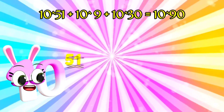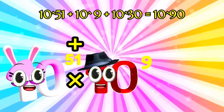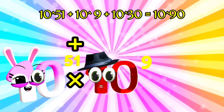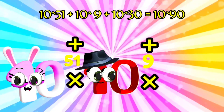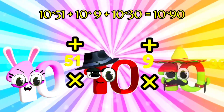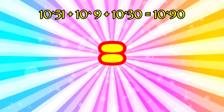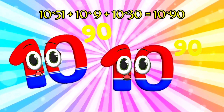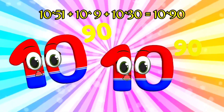I'm Sextillion, and I've got 51 fluffy zeros. I'm One Billion, and I'm one and nine zeros. I'm Nonillion, and I've made up of 30 strong zeros. I'm Novemvigintillion, and I've got 90 zeros.